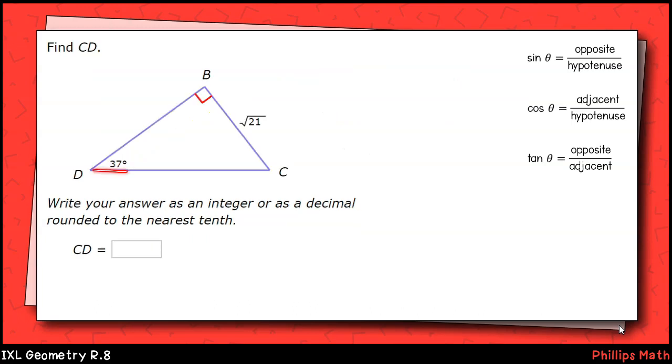Last one. We're looking for the hypotenuse, and we're given a leg and an angle opposite that leg. We'll use the sine function this time, which relates the opposite leg to the hypotenuse of a right triangle. We'll set this up as sine 37 equals the square root of 21 over the hypotenuse, which we'll call x.